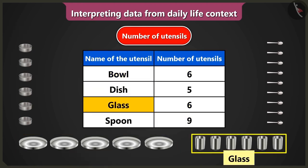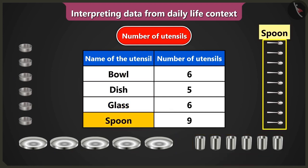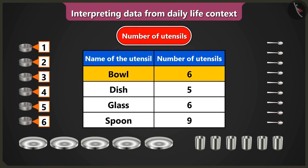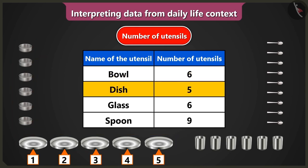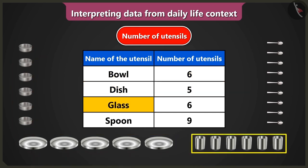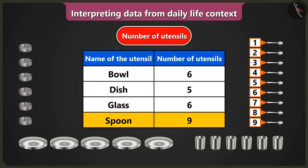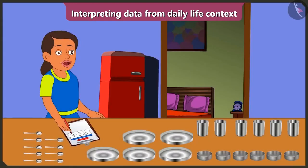Names of utensils — bowl, dish, glass, and spoon — are written here. So, the data about four kinds of utensils is given. The number of bowls is six, the number of dishes is five, the number of glasses is six, and the number of spoons is nine. I have interpreted the data about the number of utensils from this table.